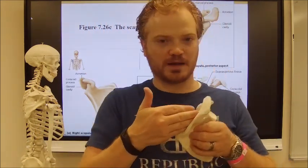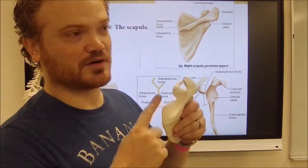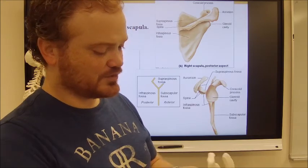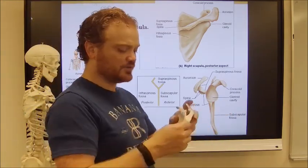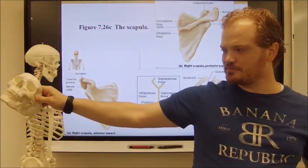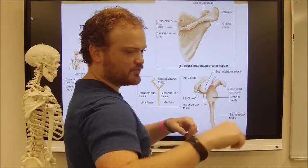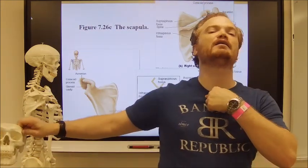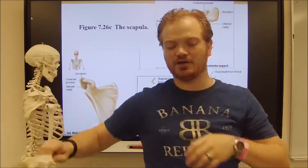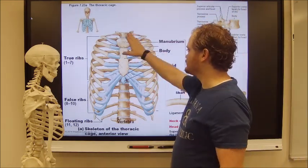The reason to know all these parts — like the supraspinous fossa — is that when we do muscles, they'll be named after these structures. So there's a supraspinous fossa and a muscle called the supraspinatus in it. The large scapula exists because muscle wraps all around it — that's what holds the arm out and keeps it from dropping, since the only point of arm connection to the skeleton is at the sternum via the clavicle.